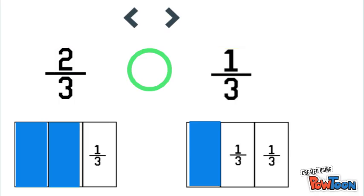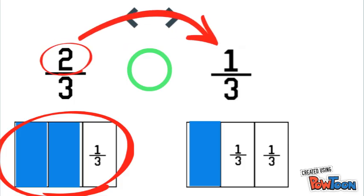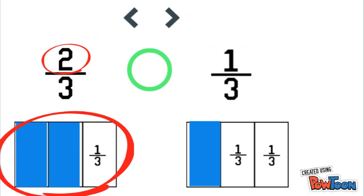Now, we can look at our shaded regions of our models and we can see that two thirds has a greater amount shaded in. And we also know that because it also has a numerator of two, which is greater than a numerator of one. So two thirds is greater than one third.